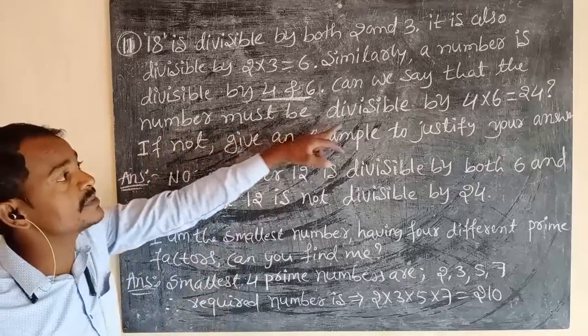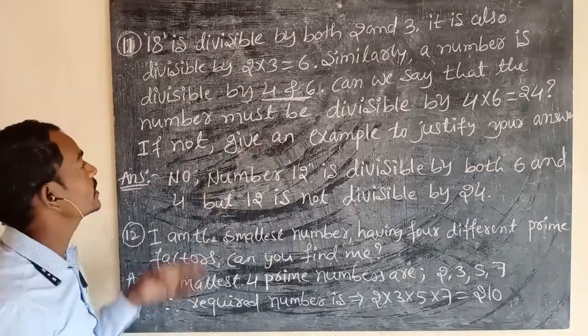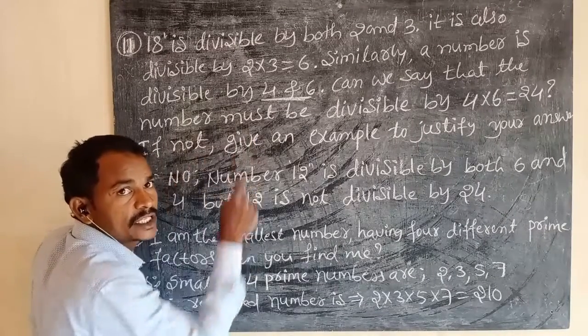Can you say that the number must be divisible by the product of 4 and 6, which means 24? If not, give an example to justify your answer. So, the example for this question: